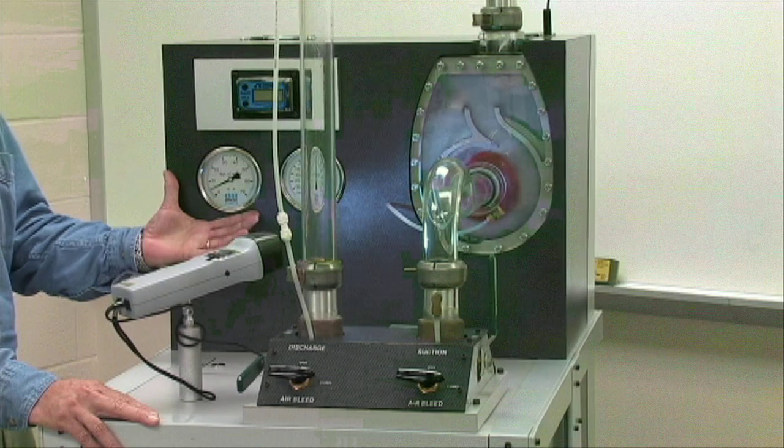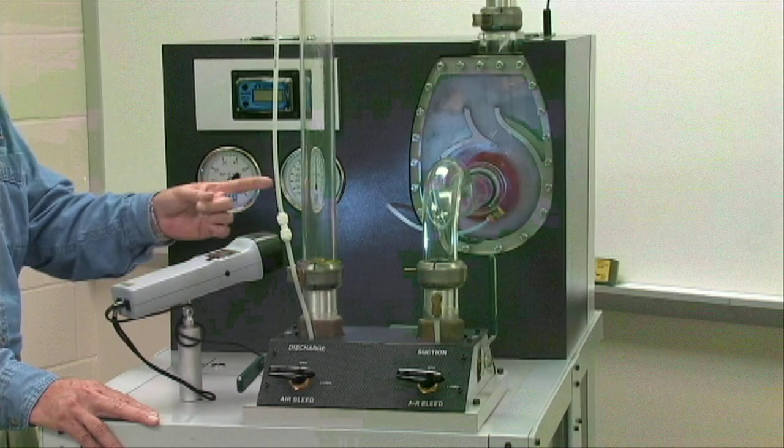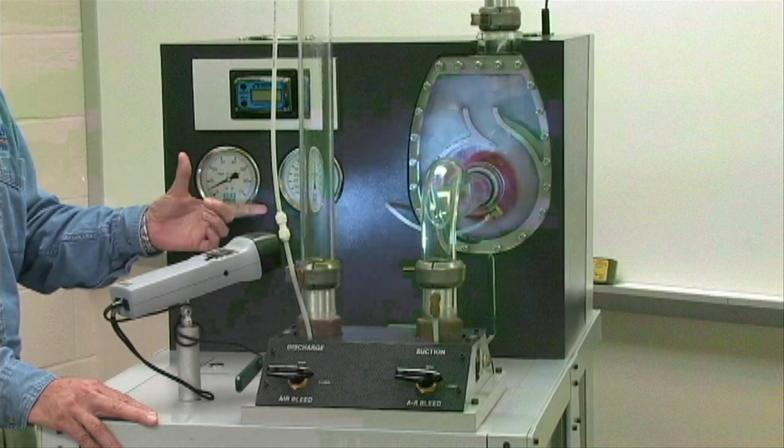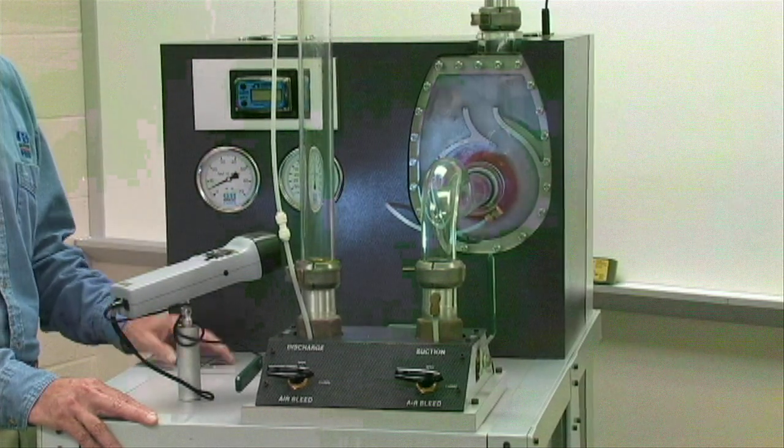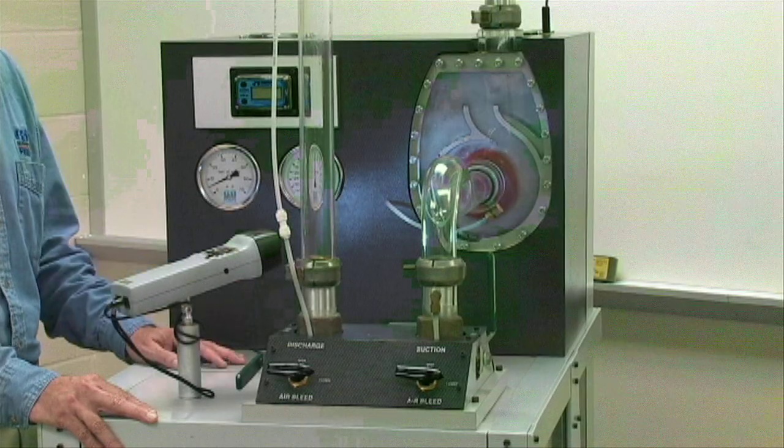Noting the pressure on the discharge gauge during the priming process proves that air is being compressed on the discharge side, not allowing water to move up the suction pipe.